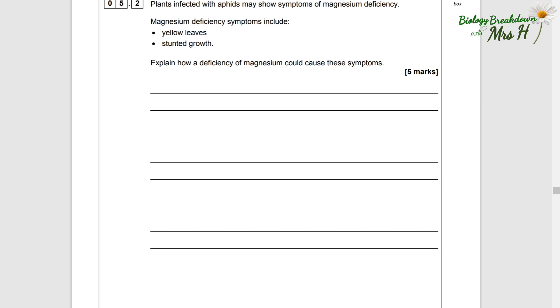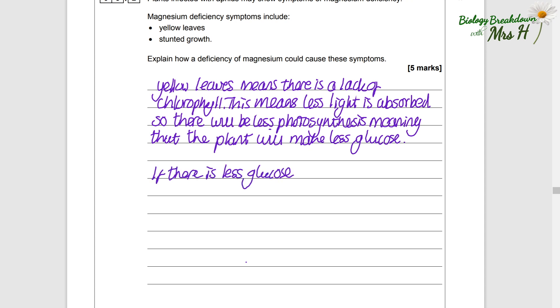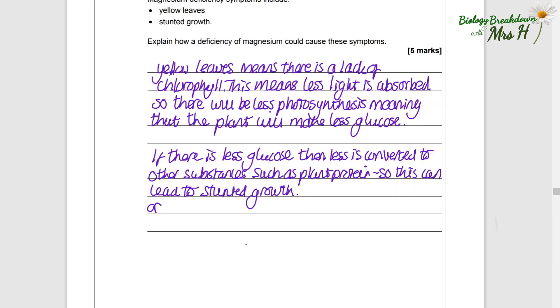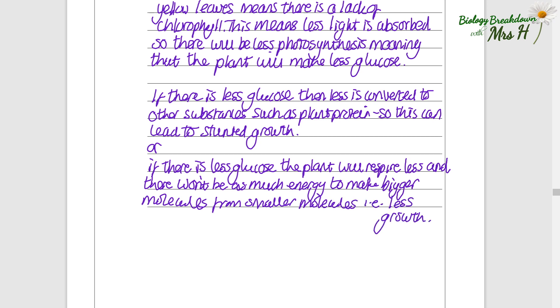5.2: Plants infected with aphids may show symptoms of magnesium deficiency. Magnesium deficiency include yellow leaves and stunted growth. Explain how a deficiency of magnesium could cause these symptoms. Well, yellow leaves means there is a lack of chlorophyll. This means less light can be absorbed, so there will be less photosynthesis, meaning the plant will have less glucose. And if there's less glucose, then less is converted into other substances such as plant protein, so this can lead to stunted growth. Or if there is less glucose, the plant will respire less and there won't be as much energy to make bigger molecules from smaller molecules, i.e. there will be less growth.